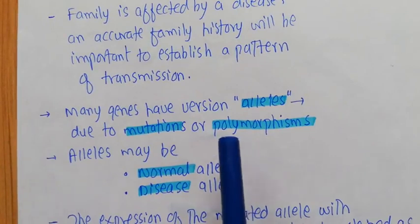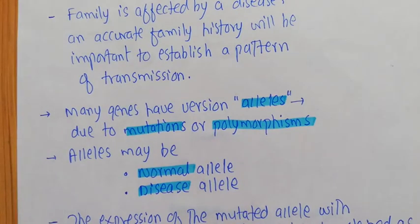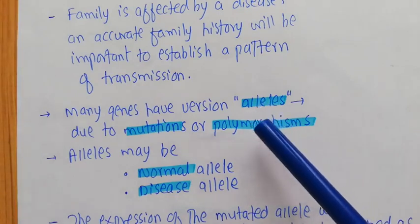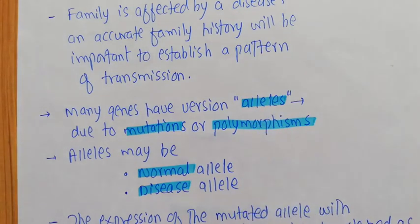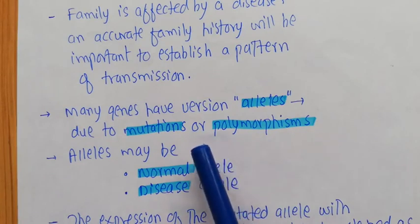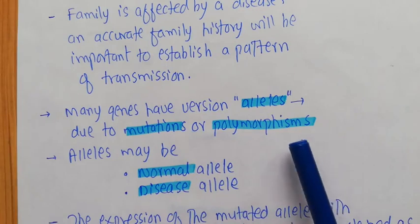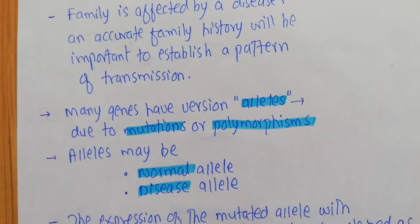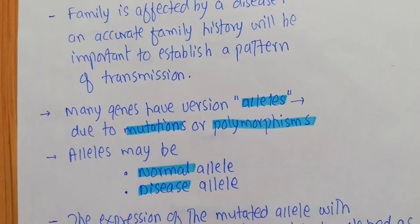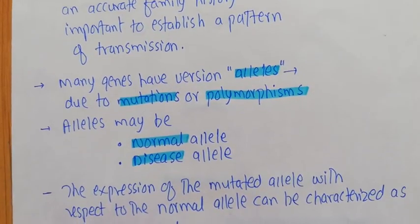When you talk about genes, many genes have versions — these versions are known as alleles. Two important phenomena are responsible for making the versions of a gene: one is known as mutations and the other is known as polymorphism. Because of mutations or polymorphism, you can actually have the versions, or technically you can say you can have the alleles of the genes.